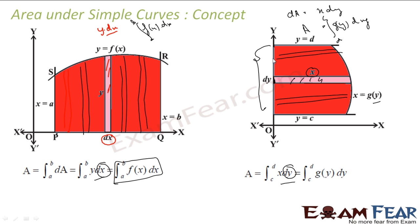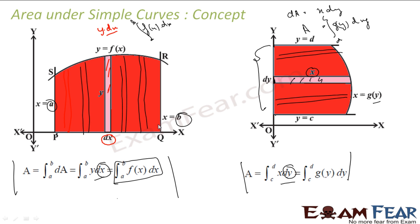We always talk about the absolute area because area can't be negative. So even if you get a negative value, you take the positive part. In the first case, x is varying from a to b; in the second case, y is varying from c to d. This is the basic concept. In one case x is variable and in the other case y is variable.